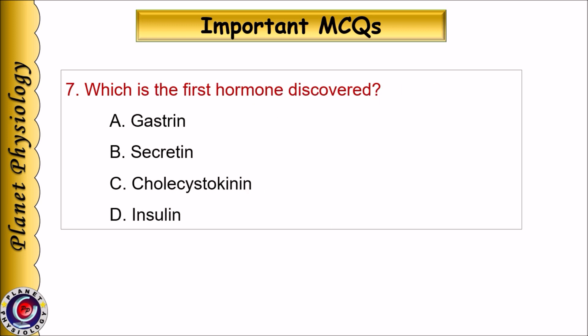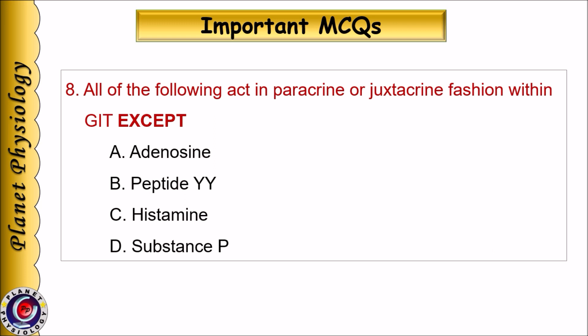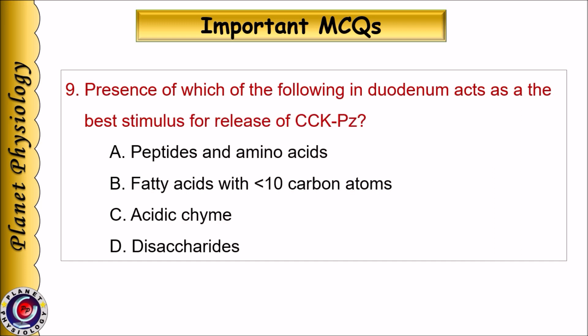Number 7: Which is the first hormone discovered? A. Gastrin, B. Secretin, C. Cholecystokinin, D. Insulin. Number 8: All of the following act in paracrine or juxtacrine fashion within the GIT, except: A. Adenosine, B. Peptide YY, C. Histamine, D. Substance P. Number 9: Presence of which of the following in the duodenum acts as the best stimulus to release CCK-PZ? A. Peptides and amino acids, B. Fatty acids with less than 10 carbon atoms, C. Acidic chyme, D. Disaccharides.